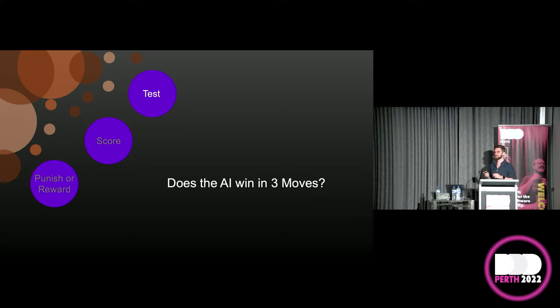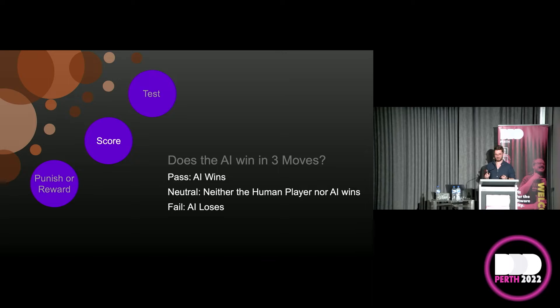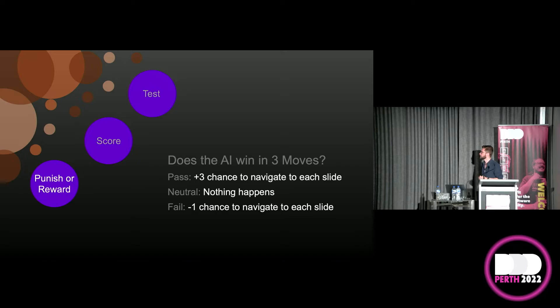Our test: due to the limited time of one lone man's calendar and the absurd amount of games of tic-tac-toe, the test is: does the AI win in three moves? The converse: does the AI lose in three moves? For our score — the number of winning games is not evenly distributed among total games; there are far more games where neither player nor AI wins. So we consider three results: pass — the AI wins; neutral — neither wins; and fail — the AI loses.